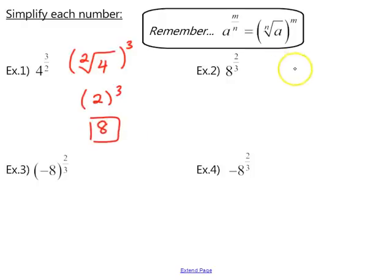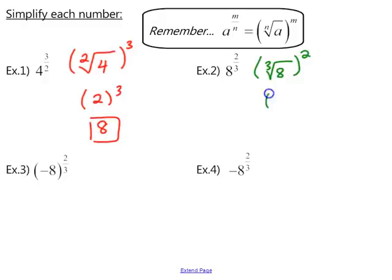For example 2, first convert it into radical notation: take the base and put it underneath the radical. The denominator is the index and we raise that term to the power of the numerator. The cube root of 8 is 2 — you can simplify using a factor tree or a calculator. Then 2 raised to the power of 2 gives an answer of 4.